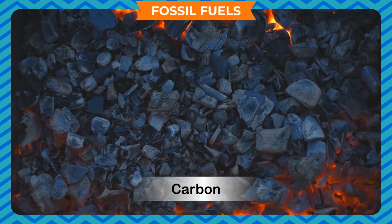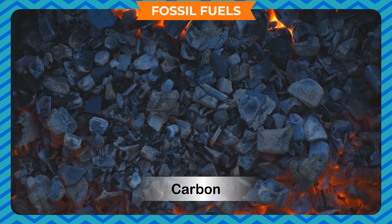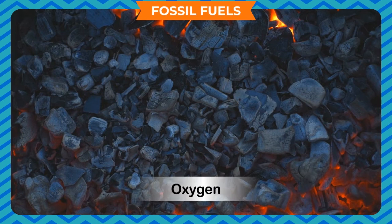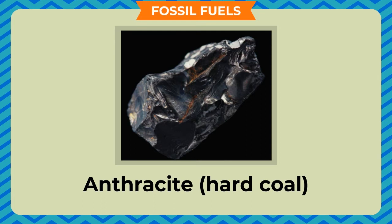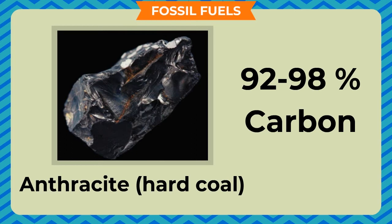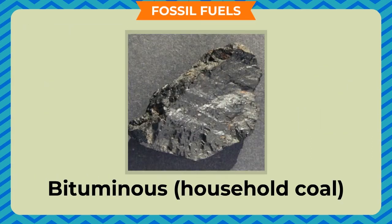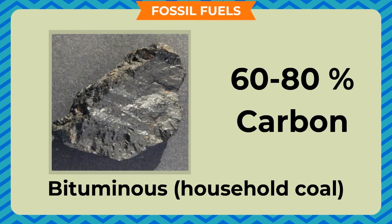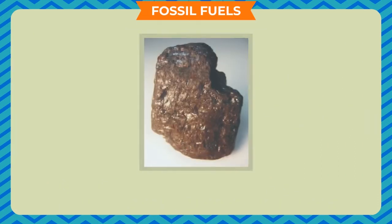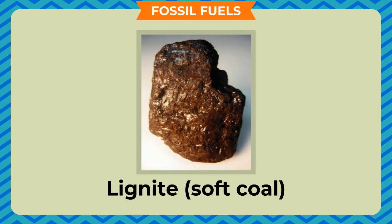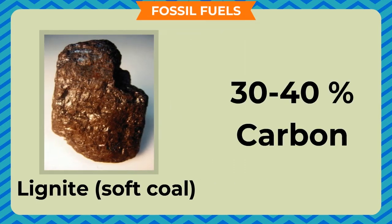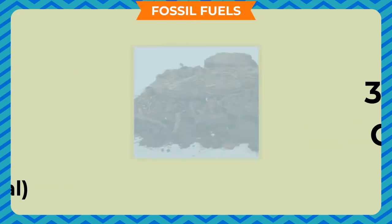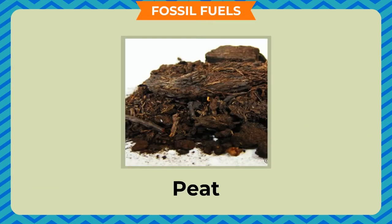Types of coal. Coal mainly contains carbon, along with other substances like hydrogen, oxygen and traces of nitrogen and sulfur. Anthracite, also known as hard coal, is the best variety containing up to 92-98% carbon. Bituminous, also known as household coal, contains about 60-80% carbon. Lignite, also known as soft coal, has about 30-40% carbon. Peat is the most inferior quality coal.